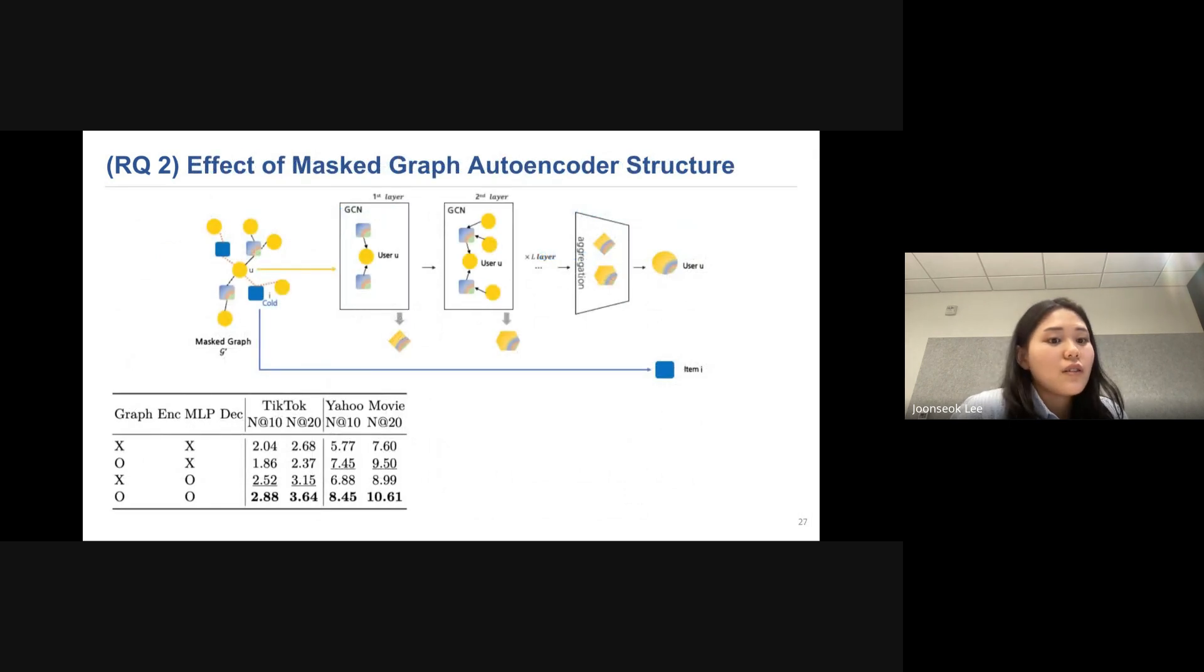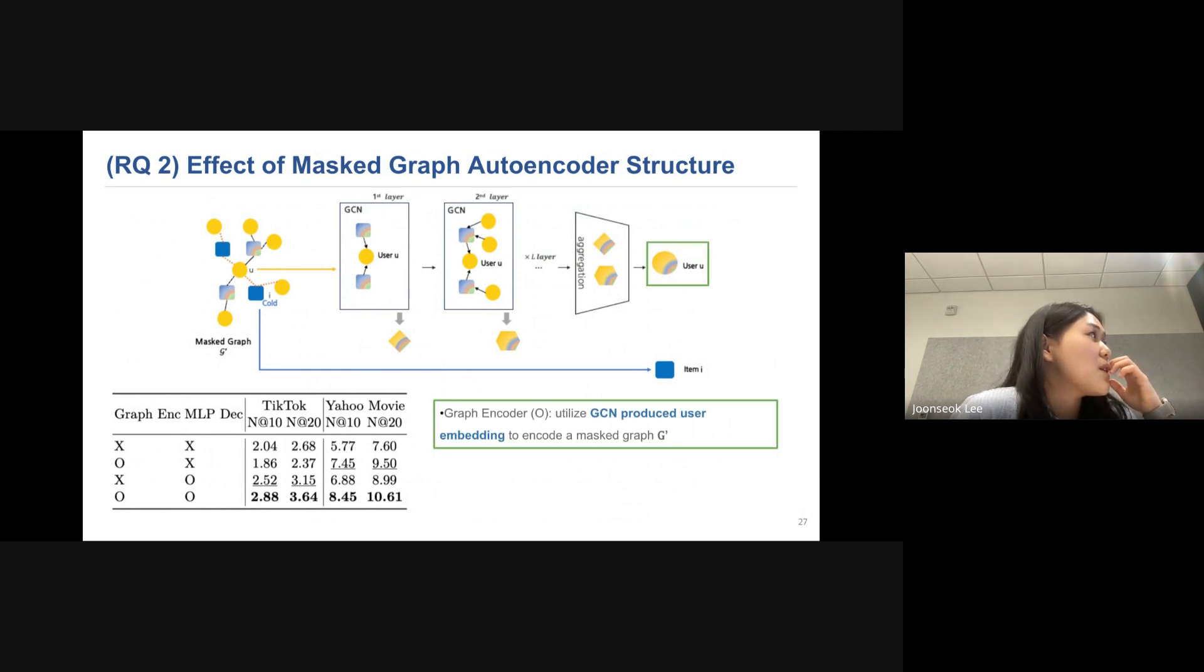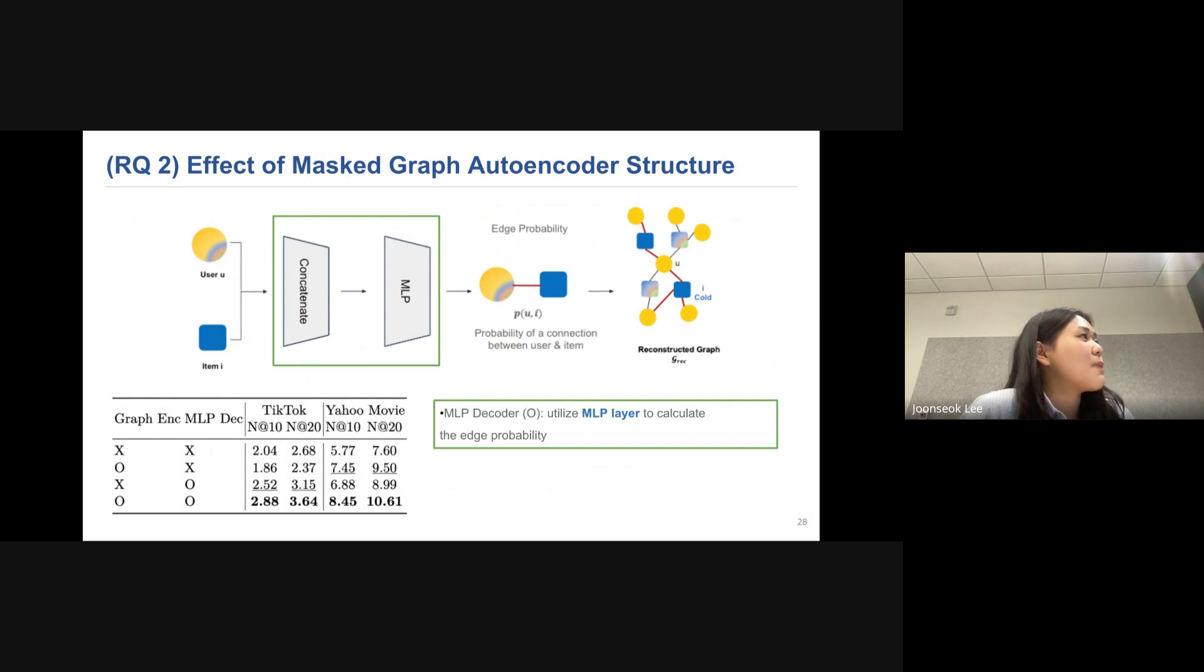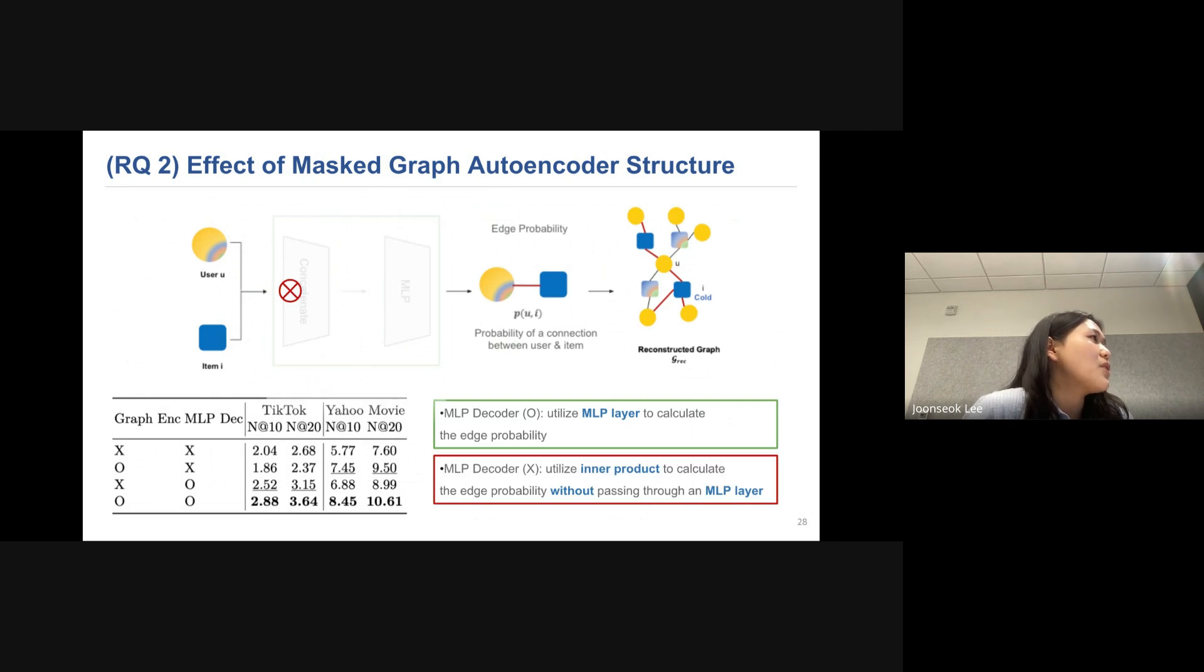And we also want to see the effect of the mask graph autoencoder structure. So what I mean by there is graph encoder, it means we utilize the GCN-produced user embedding to encode the mask graph G prime. And if there's no graph encoder, it means we utilize user embedding without processing it through GCN. And what it means by there is MLP decoder is we utilize the MLP layer to calculate the edge probability. And if there's no MLP decoder, it means we utilize inner product to calculate the edge probability without passing through MLP layer. And if you see the result on the left, you can see that using graph encoder and using MLP decoder shows the best result.